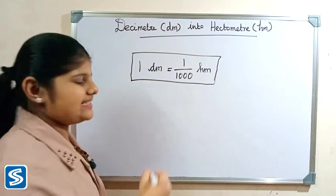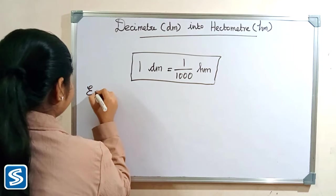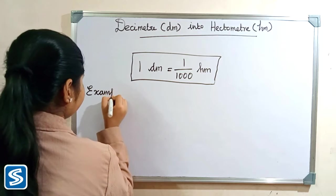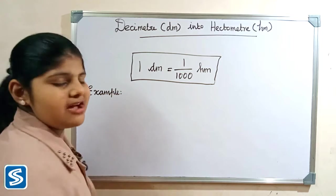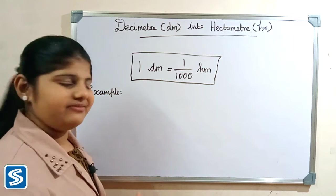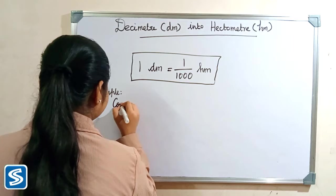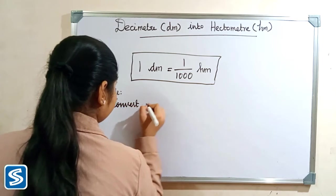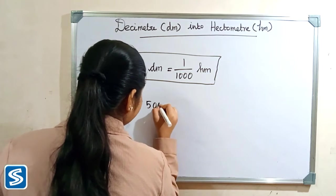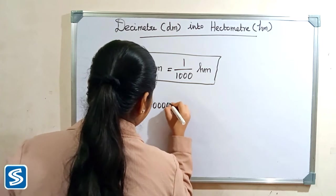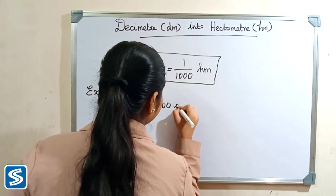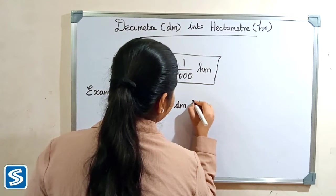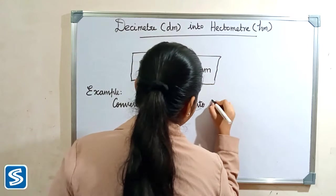So now we will take some examples. For example, convert 50,000 decimeter into hectometer.